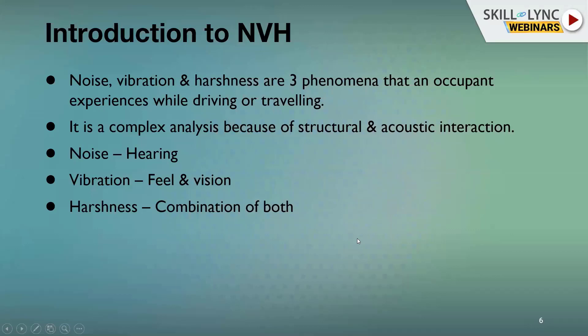Vibration is what you feel and see — it can be felt at the brakes, accelerator pedal, or steering system, or seen when a mirror starts vibrating and you cannot see objects in it clearly. Harshness is the combination of both noise and vibration — for example, when a vehicle is driving on a rough road, both noise and vibration are present in the vehicle at the same time.